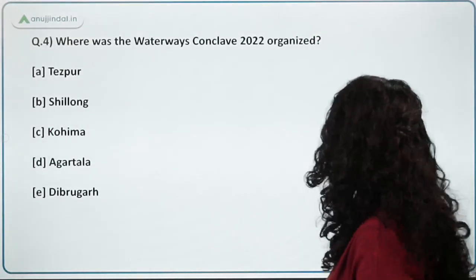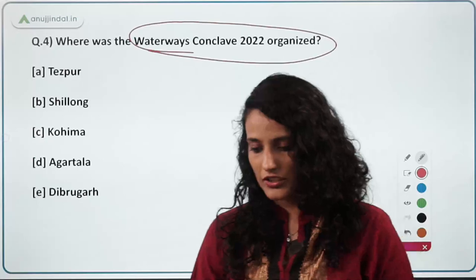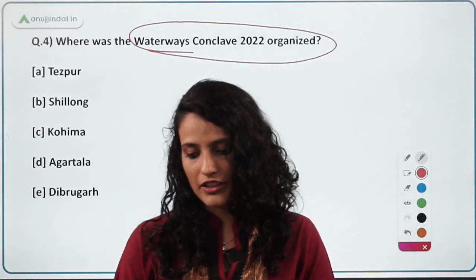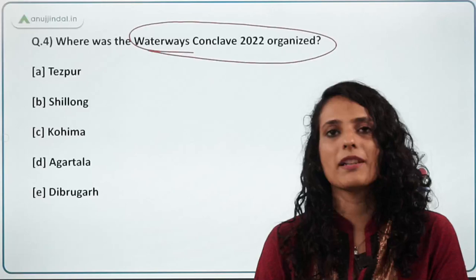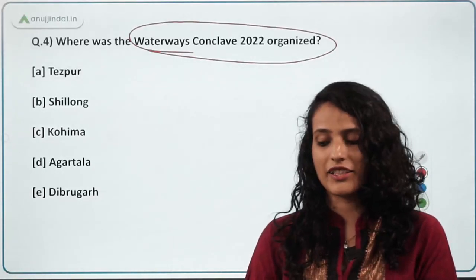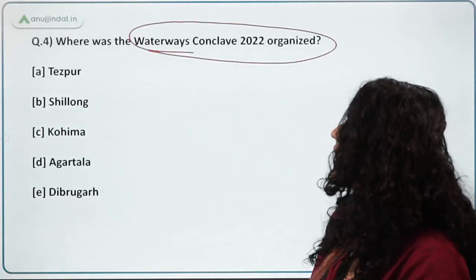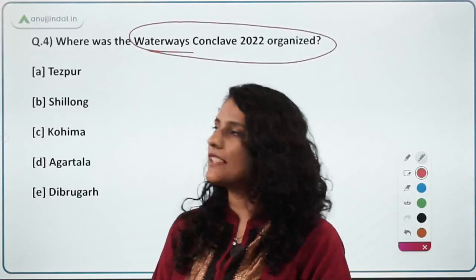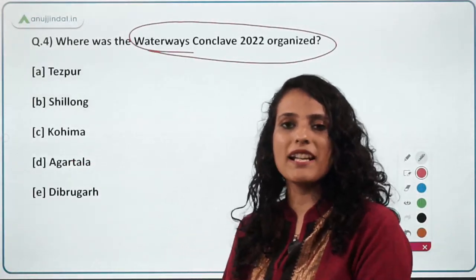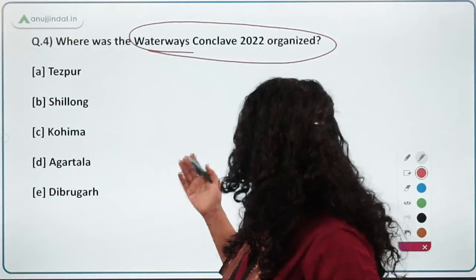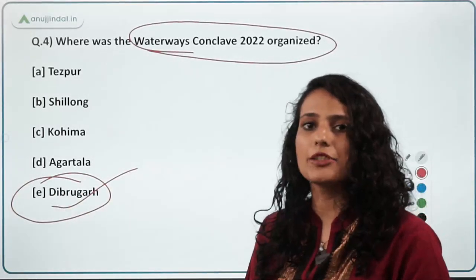The next question asks where the Water Conclave 2022 was organized — by the Ministry of Ports, Shipping and Waterways, whose Union Minister is Sarbananda Sonowal. The correct answer is Assam. The conclave was held at Dibrugarh, Assam — at the Dibru-Saikhowa Wildlife Sanctuary, a very important wetland and wildlife sanctuary famous for wild water buffalos. A famous bridge also starts from Dibrugarh-Saikhowa and extends to Arunachal Pradesh.